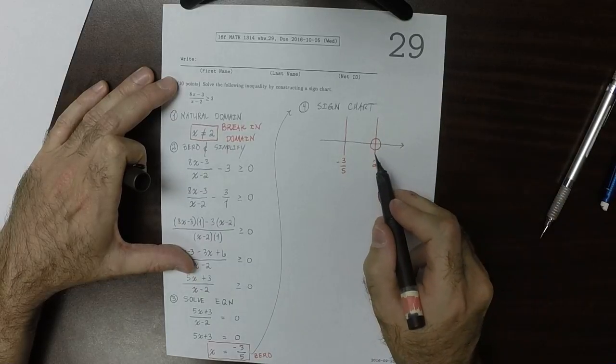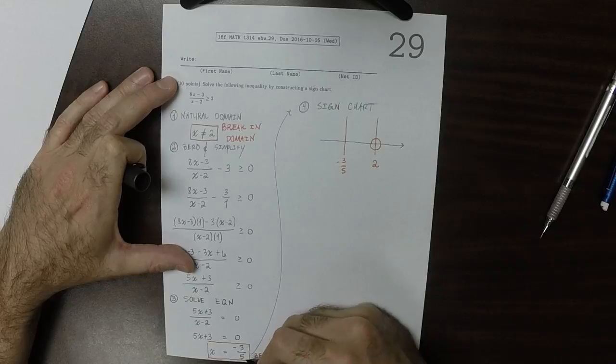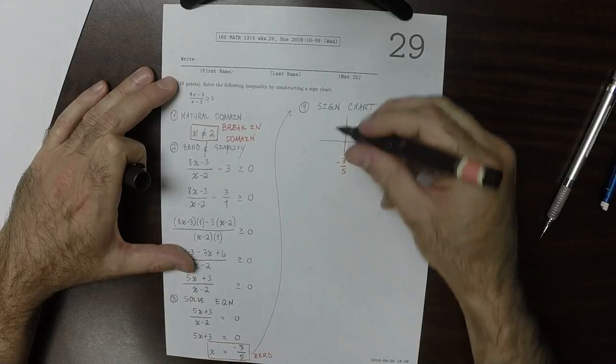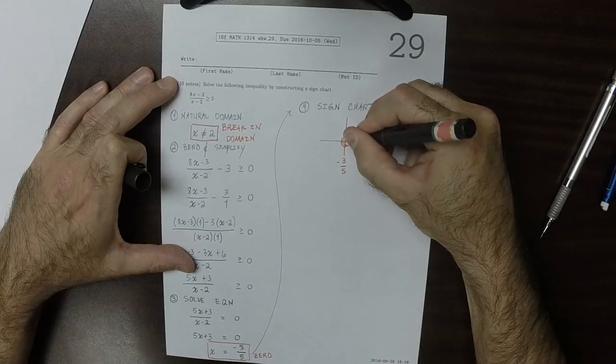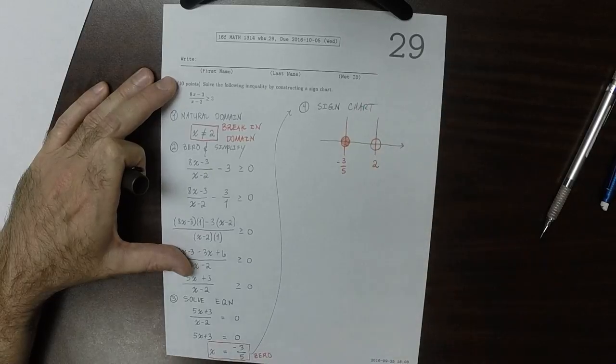So now 2 is a break in the domain, so I'm going to draw it open so that I don't forget that that is a break in the domain. And this is a solution which is in the domain, so I'm going to draw it closed.